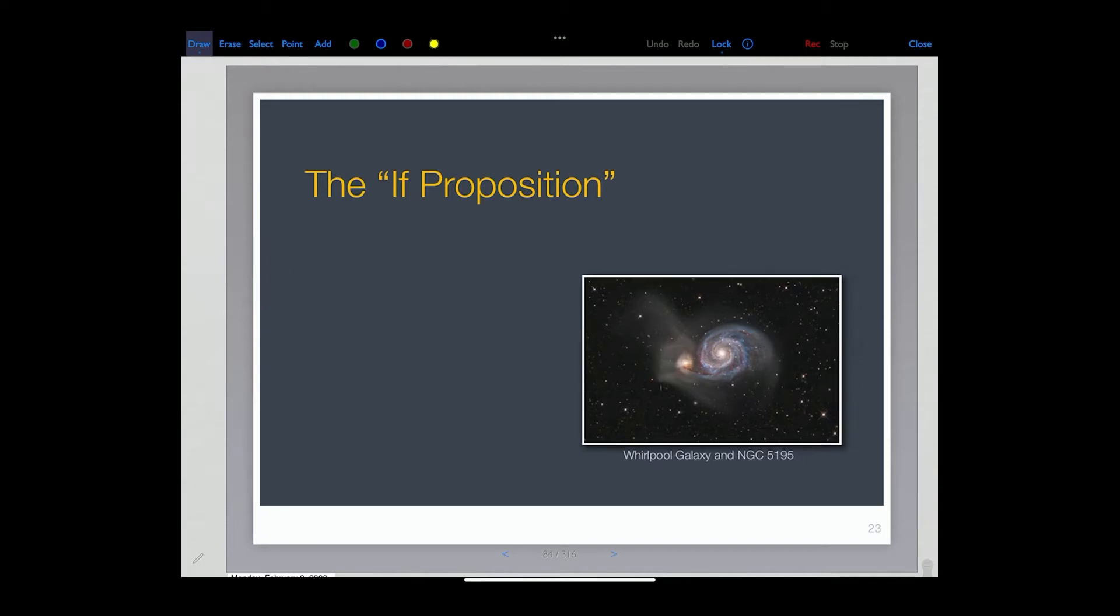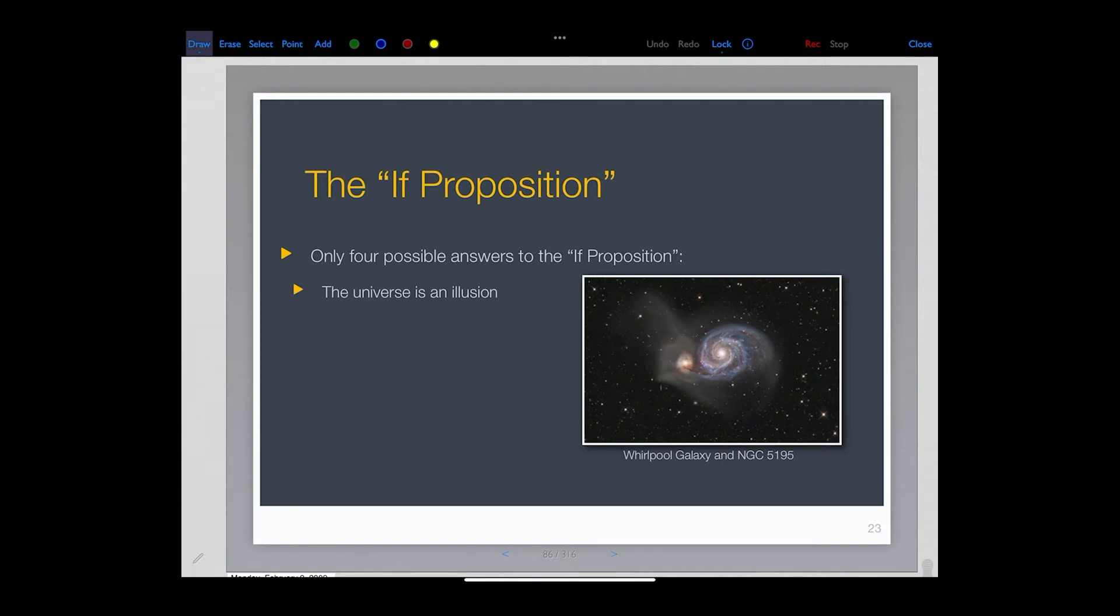Or if there isn't something eternal, then what's not eternal came from nowhere. And there's only a few ways of approaching this. So one approach is to say, in the first instance, that the universe is an illusion.